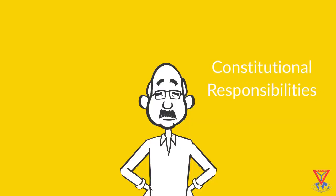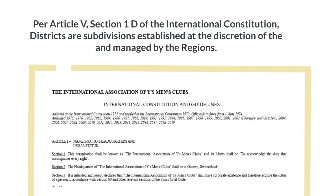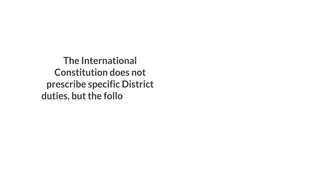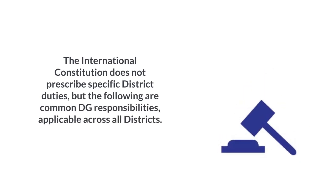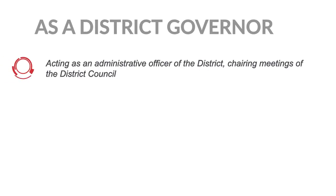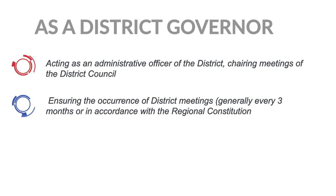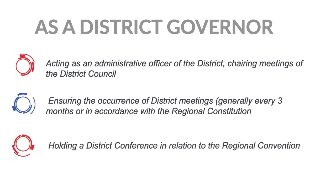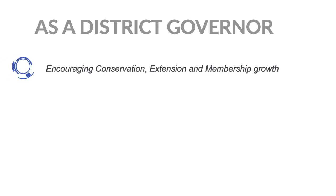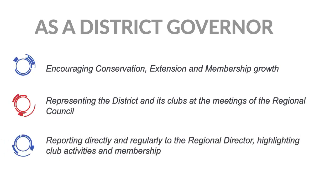Constitutional responsibilities. Per Article 5, Section 1D of the International Constitution, districts are subdivisions established at the discretion of, and managed by, the regions. The International Constitution does not prescribe specific district duties, but the following are common DG responsibilities applicable across all districts: acting as an administrative officer of the district; chairing meetings of the district council; ensuring the occurrence of district meetings, generally every three months or in accordance with the regional constitution; holding a district conference in relation to the regional convention; encouraging conservation, extension, and membership growth; representing the district and its clubs at the meetings of the regional council; and reporting directly and regularly to the regional director, highlighting club activities and membership.